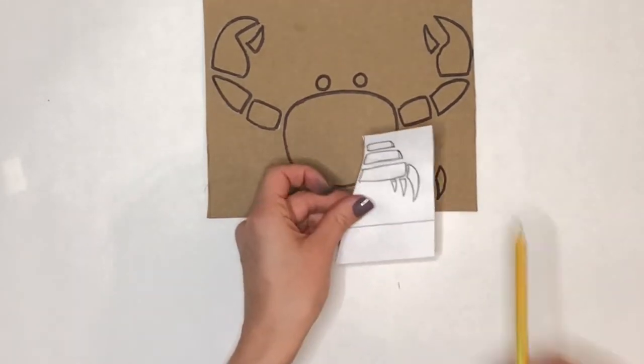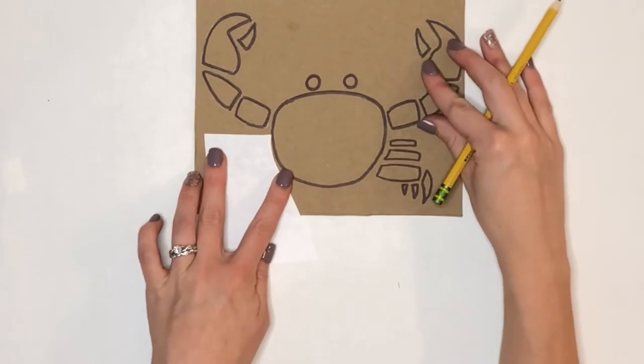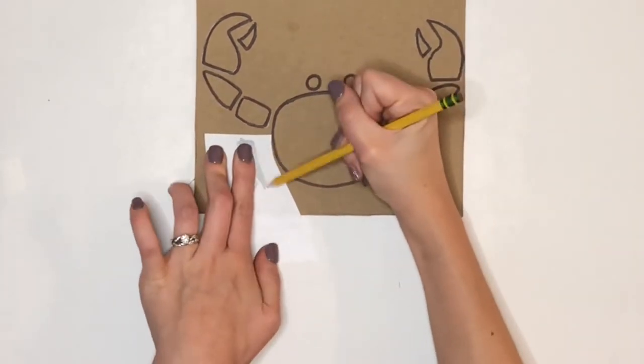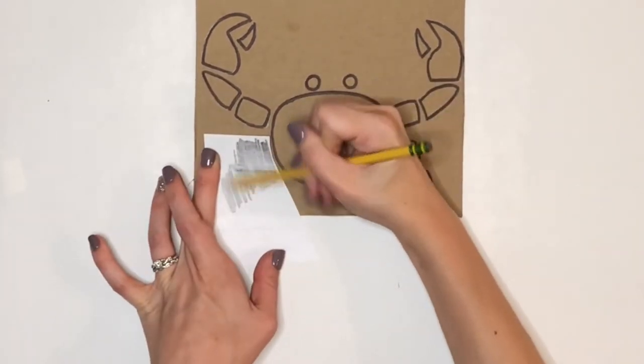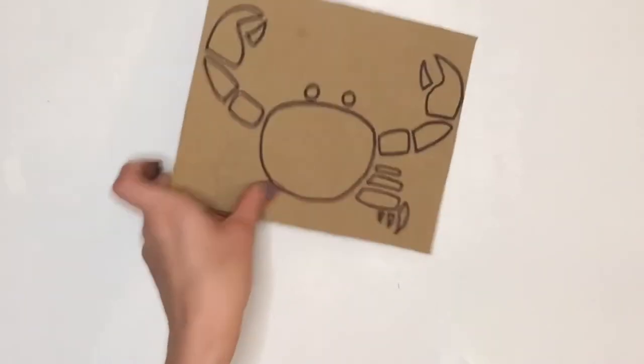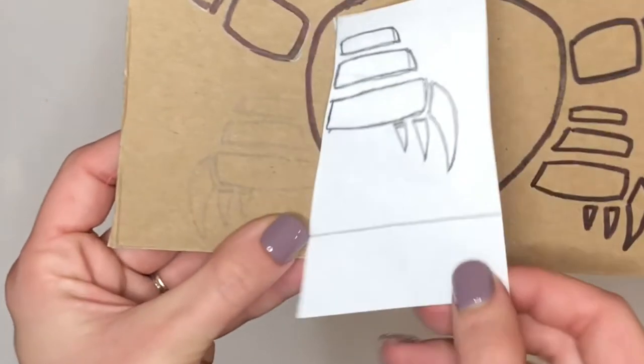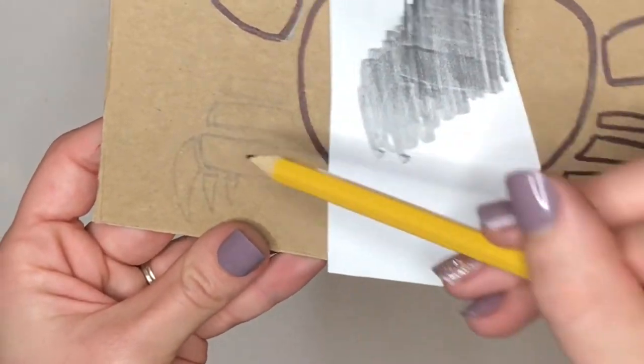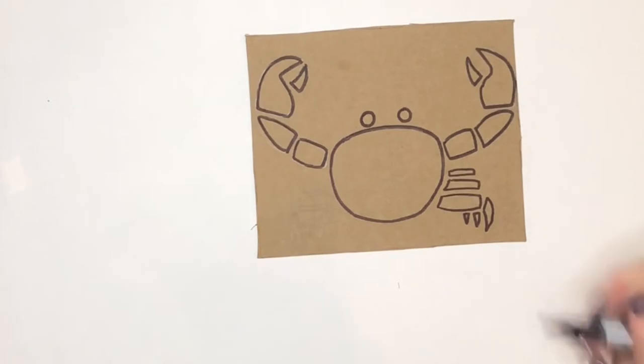And finally another fun way to transfer your image is to flip the paper over and color with pencil along the back. By doing this you are pressing the pencil from the front onto the cardboard so you will see now that I have now printed that image over onto my cardboard and I can use my sharpie to trace over it again so I can see those lines really well.